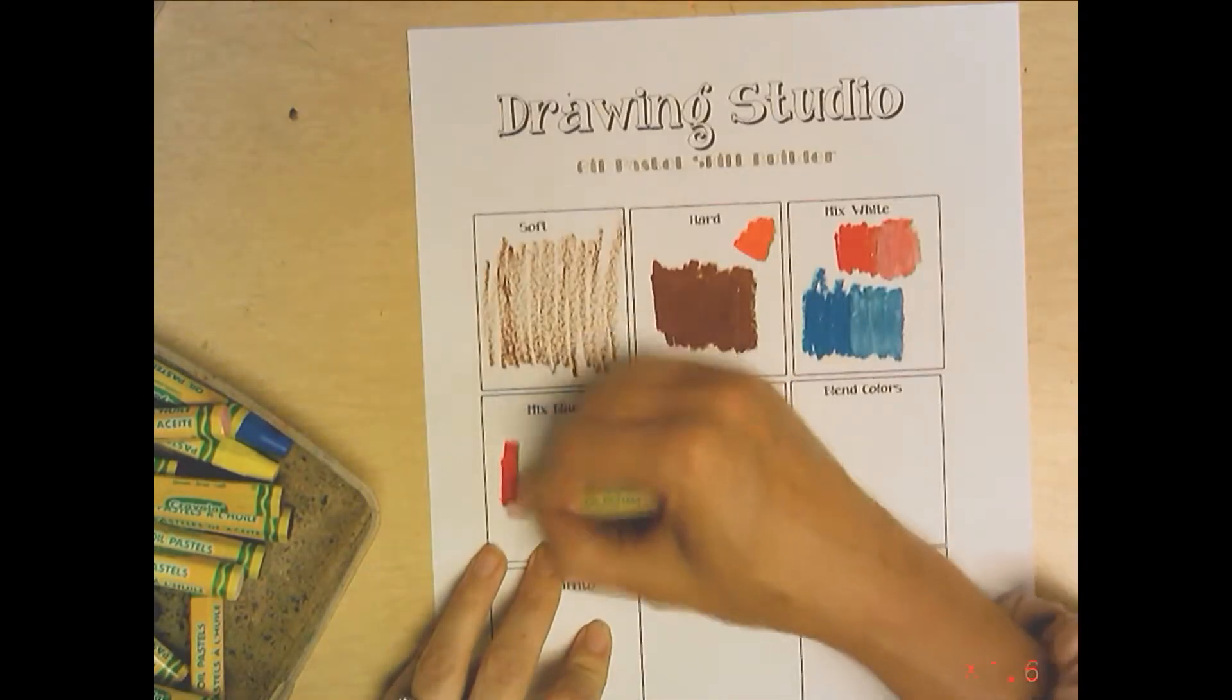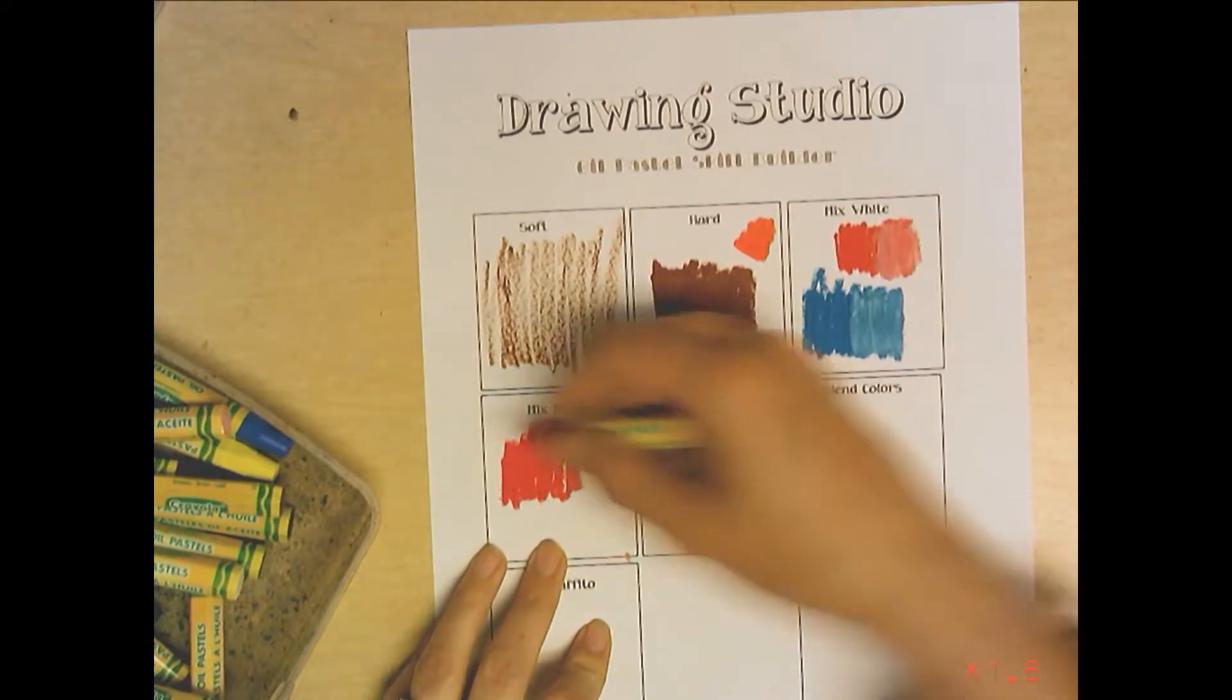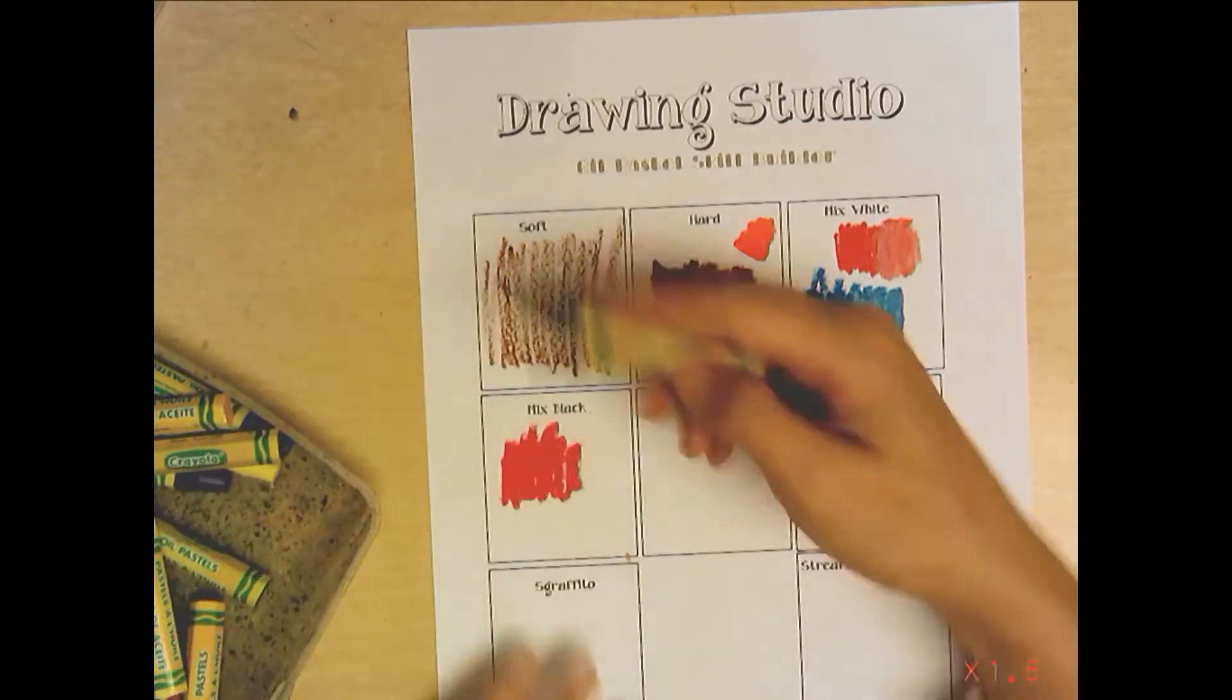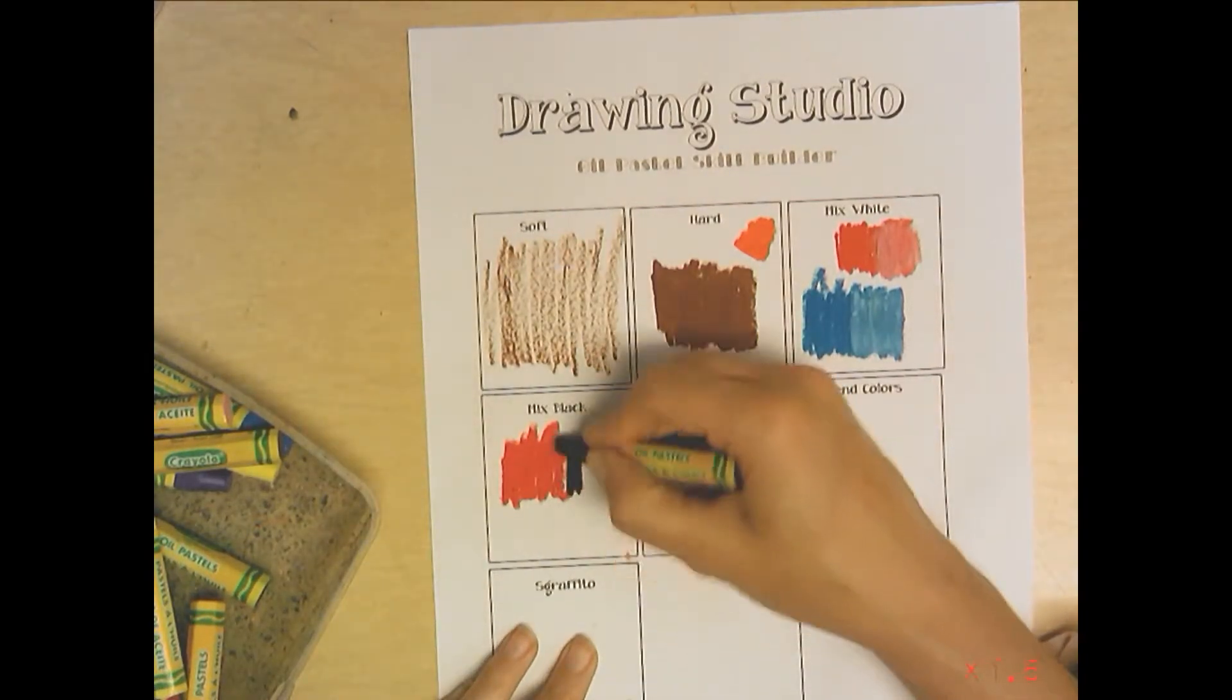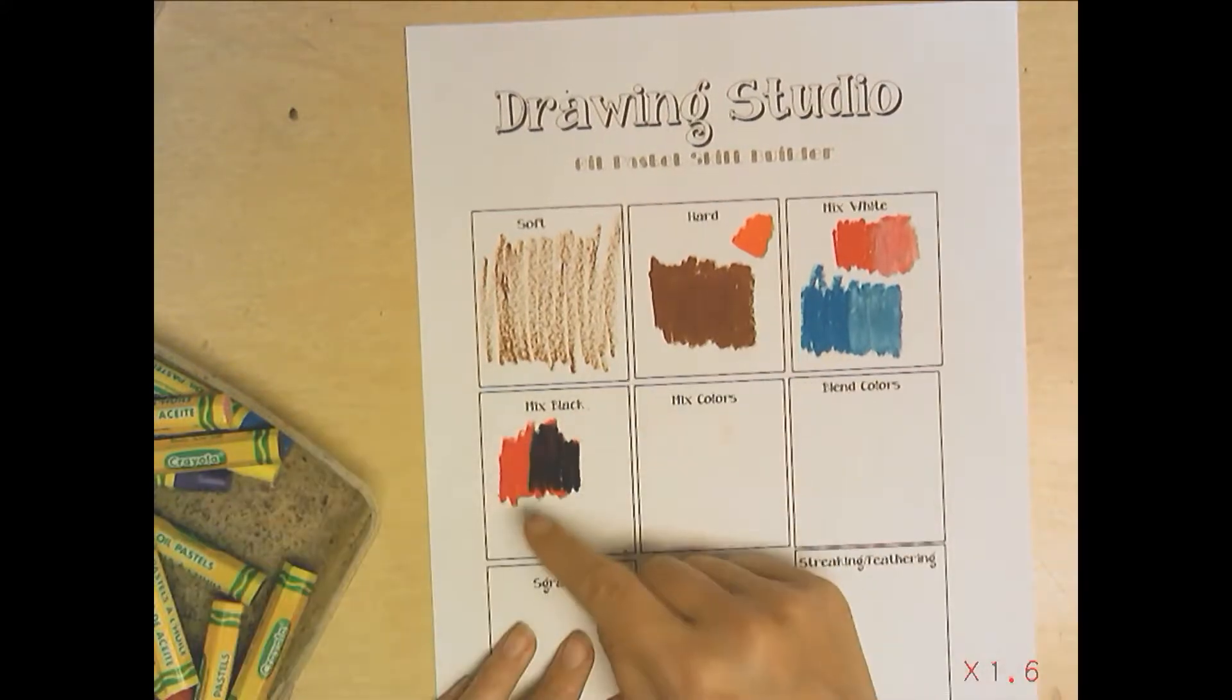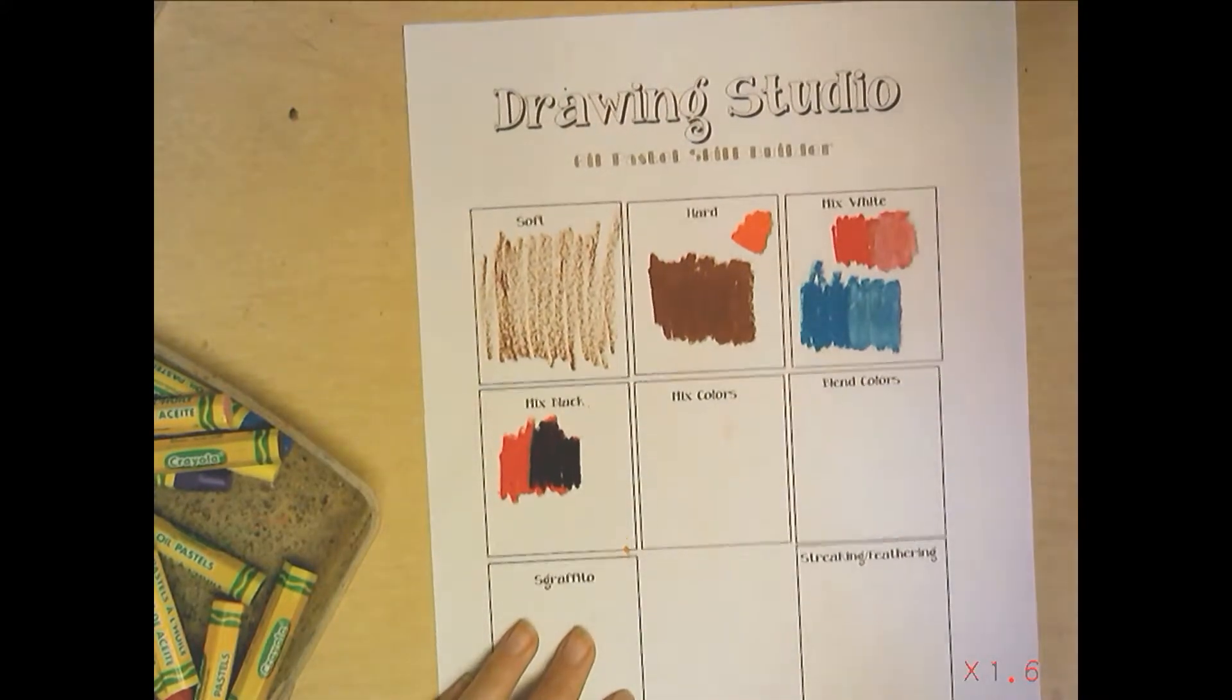Now mix with black. Do the same thing, pick a color and find your black, and go on top of that color with black. Black is a very powerful color so it almost looks black there and we want it to kind of look just like a dark red.